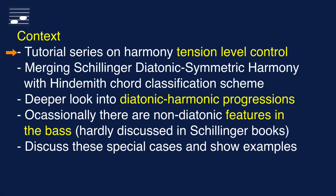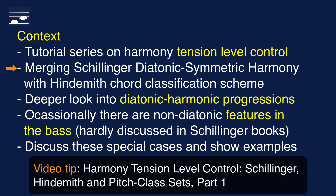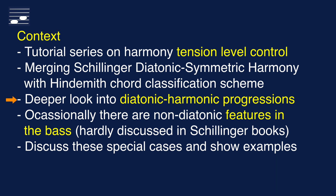Recently I started a video tutorial series on tension level control in chord progressions. The approach merges Schillinger diatonic symmetric harmony with a Paul Hindemith chord dissonance classification scheme. The result is a modified diatonic symmetric harmony system with more options for chord structure selection and better tension curve control over the progression. The diatonic character is determined by the bass part, which in both the Schillinger and the Hindemith approach mostly consists of diatonic notes. However, some mechanisms yield chromatic alterations in the bass part. I will discuss the causes of a non-diatonic bass part, how to handle the alterations, and I will show chord progression examples.